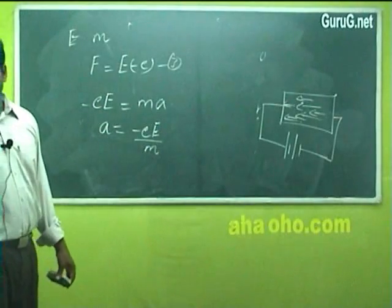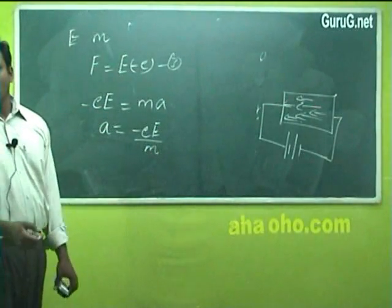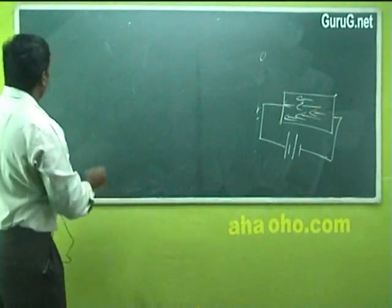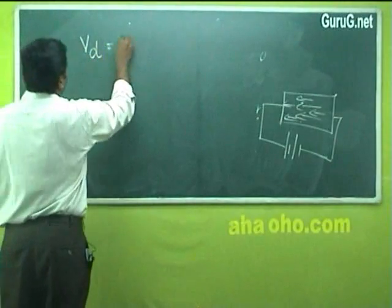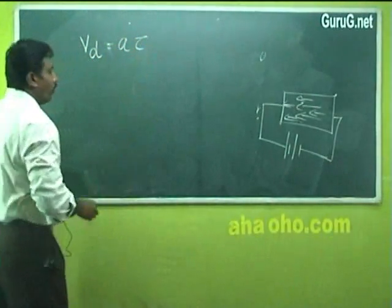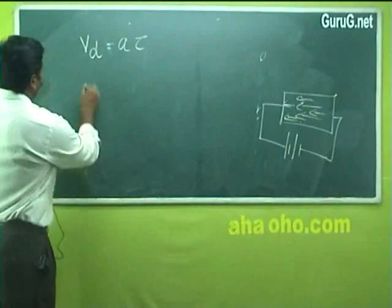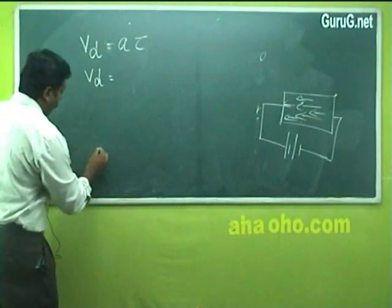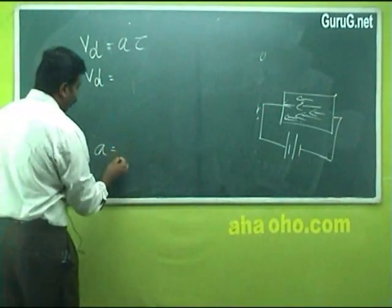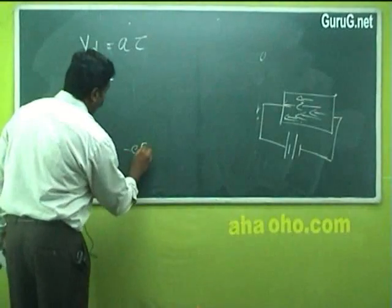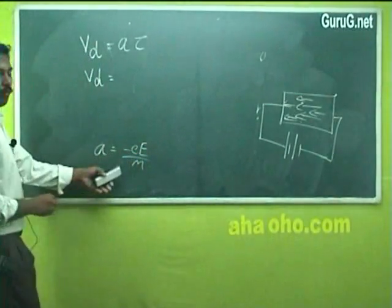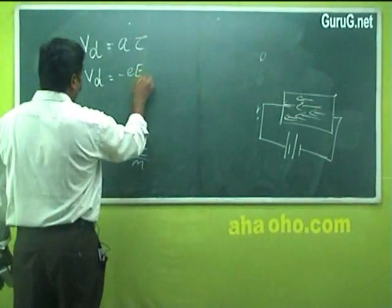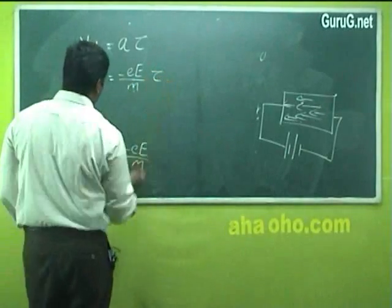A = eE / M. Substituting this in equation number 2, drift velocity VD = A into τ. Substituting the value of A, we get VD = minus eE divided by M, multiplied by τ.